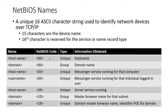By querying NetBIOS, you can find out the name of the computer and its domain, groups, the messenger service (which has long been turned off), whether it's a server or workstation, whether it holds the master browser browse list — which is what shows up when you browse the network — and whether it's the domain master browser, meaning the primary domain controller. A lot of this is now legacy and historical, and Microsoft has shut it off, though you can turn it on if you want.